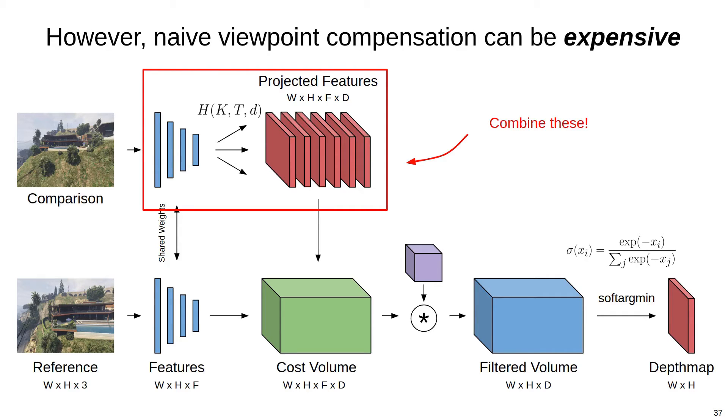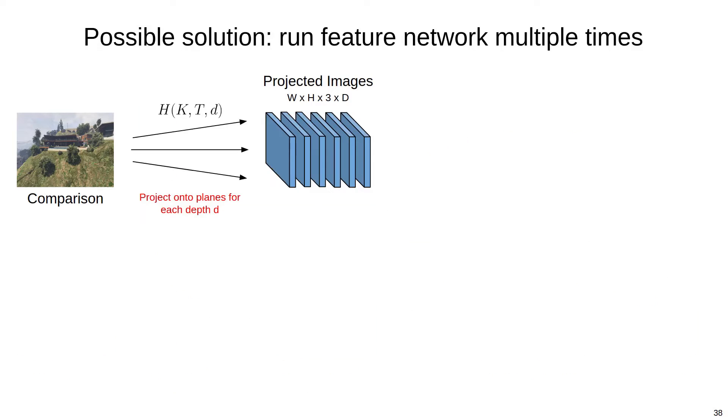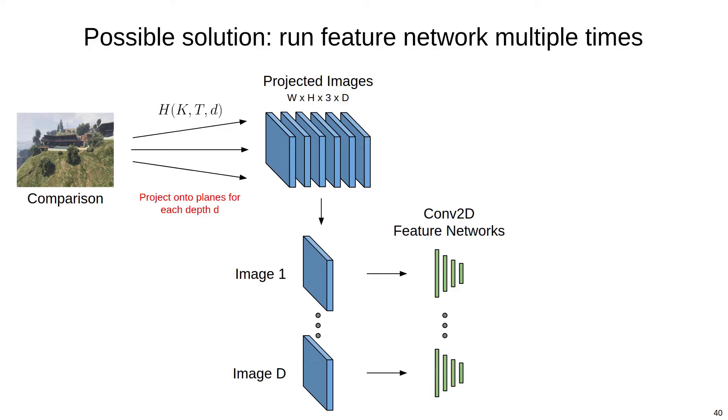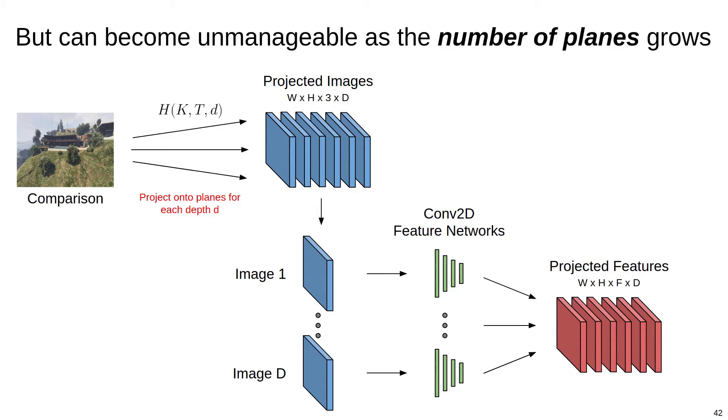However, doing this compensation naively can be computationally expensive. One option is to first project the comparison image onto the planes and then extract features from each projected image using conventional 2D convolutions. So we take the comparison image, apply the set of homographies that project the image onto the plane set, then take each image and pass it through a conventional feature network, and then aggregate all the resulting features. While straightforward, this approach requires executing the feature network multiple times, which can become unmanageable as the number of planes grows.